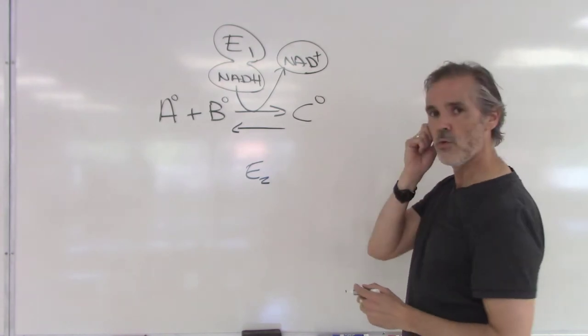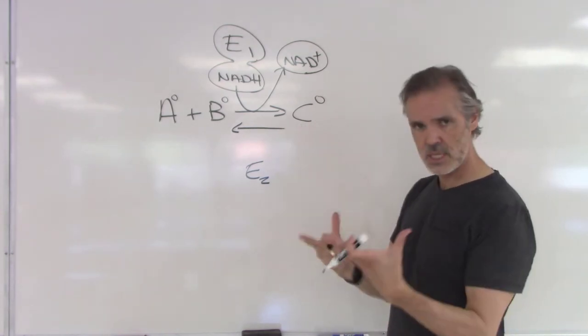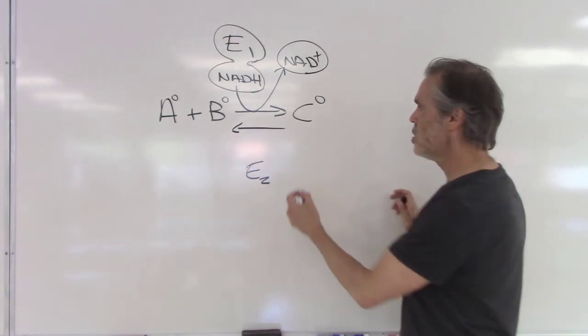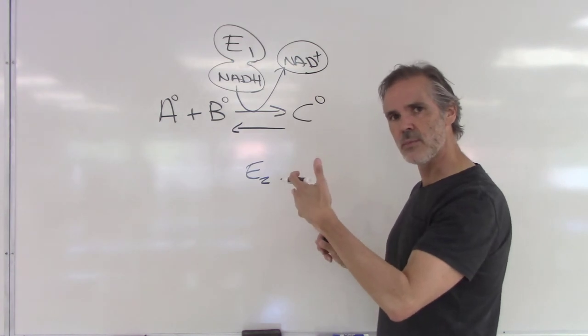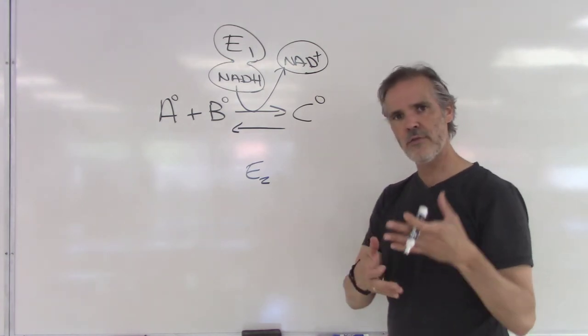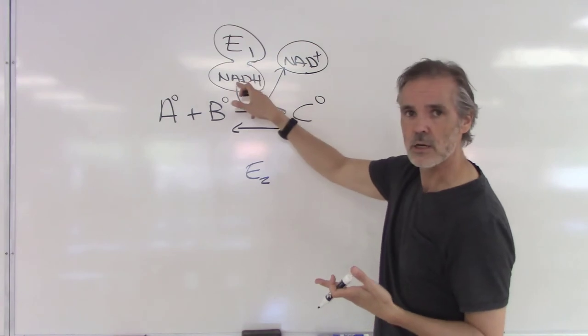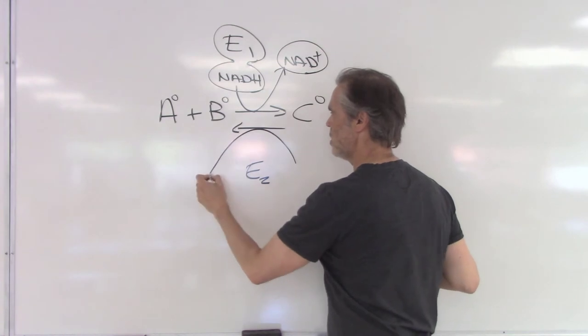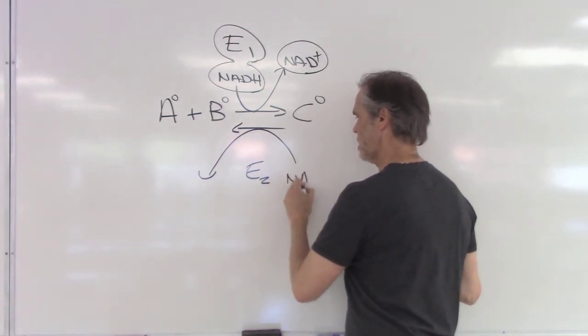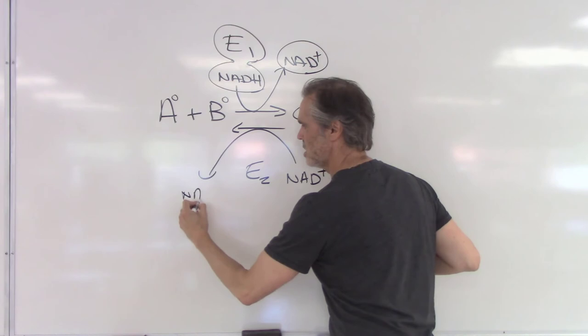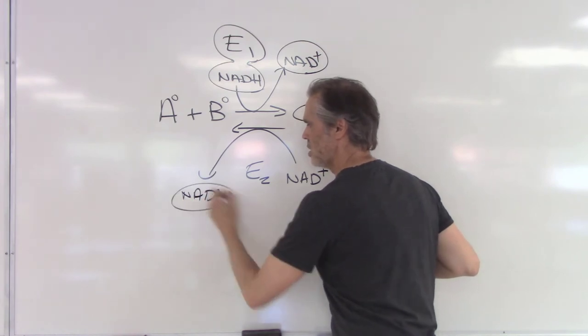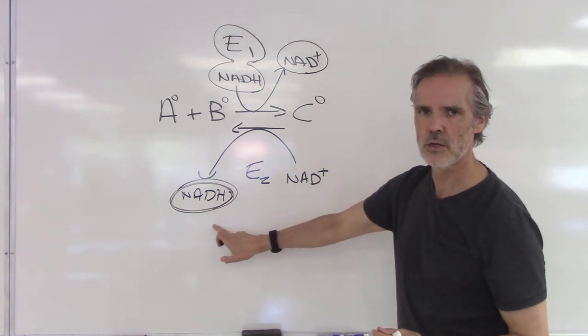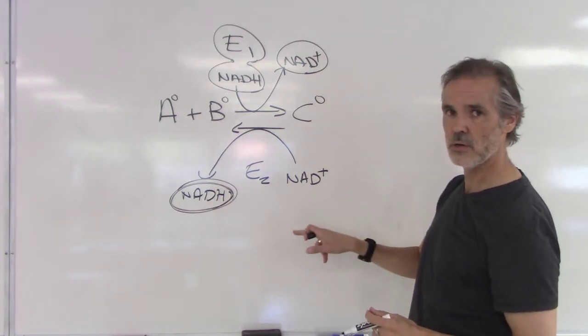Let's imagine that we want to go in the reverse. We have C and we want to convert C into its two components, A and B. If we break this in the middle we have an extra electron that was given right here. What do we do with this electron? Well, the enzyme here will now be taking NAD+ and convert it into NADH. This molecule here is the one that has the electron.